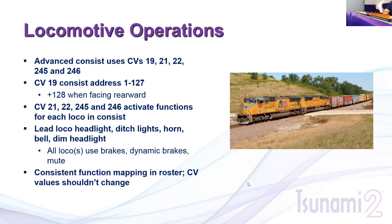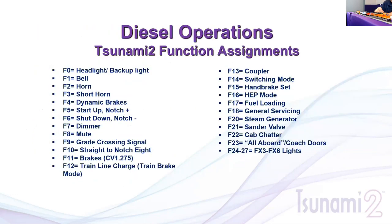For the lead locomotive, CV 22 turns on the headlight (F0 forward), F9 grade crossing, F11, and F12 — adding up to a value of 53. CVs 245 and 246 handle higher functions; most commonly I only enable F14 switching mode and F20 sanding valve. For the trailing unit, CV 22 has a different value because we add in the reverse light. This is where consistent function mapping pays off: if every locomotive uses the same button for the same effect, these CV values don't change between consists.